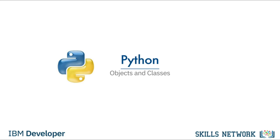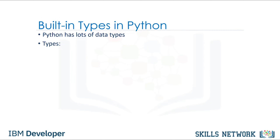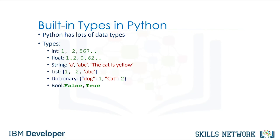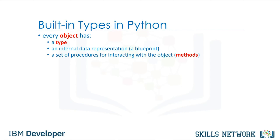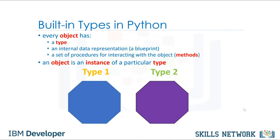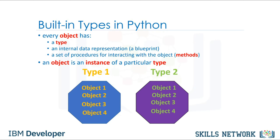In this module, we are going to talk about objects and classes. Python has many different kinds of data types: integers, floats, strings, lists, dictionaries, booleans. In Python, each is an object. Every object has a type, internal representation, and a set of functions called methods to interact with the data. An object is an instance of a particular type. We can have several objects of type 1 as shown in yellow, and several objects of type 2 shown in green. Every time we create an integer, we are creating an instance of type integer — in this case five integer objects.